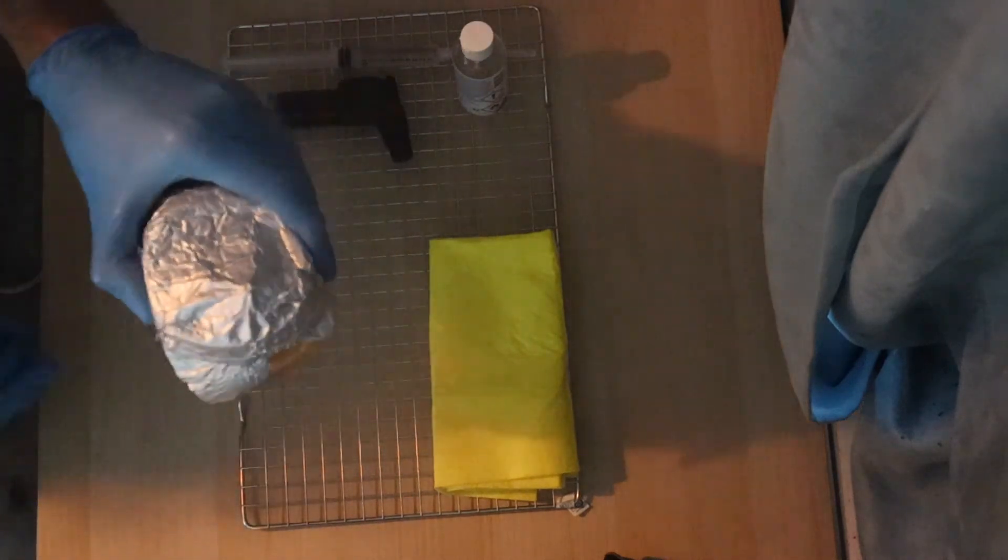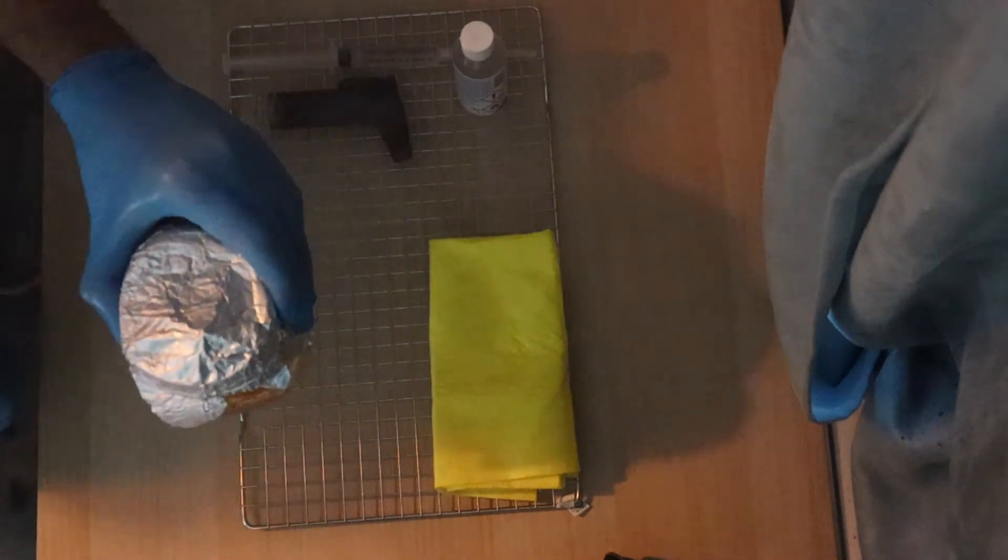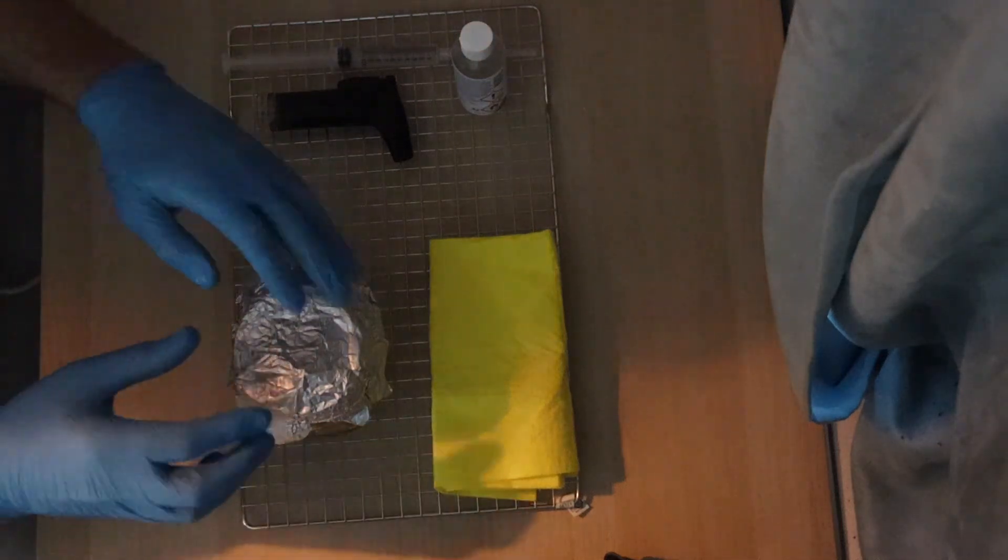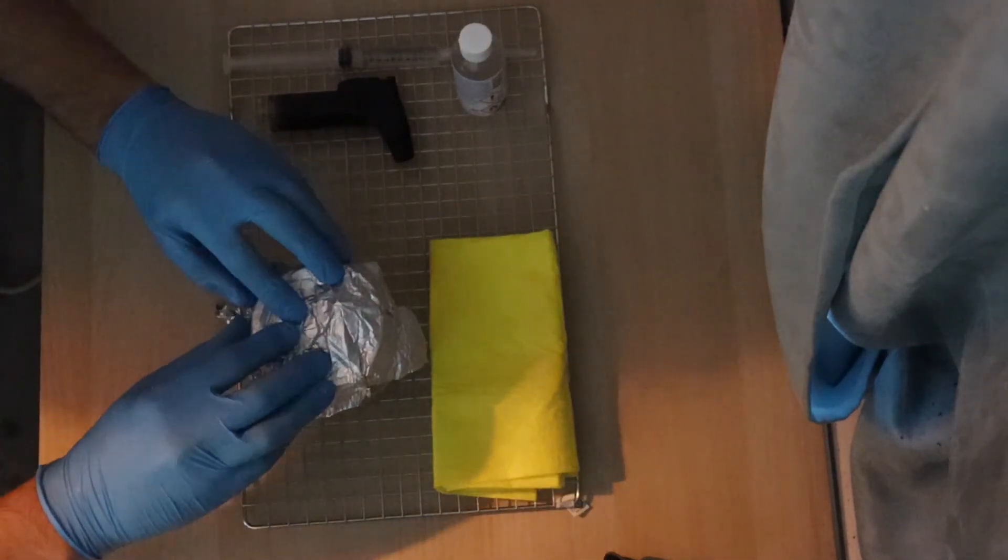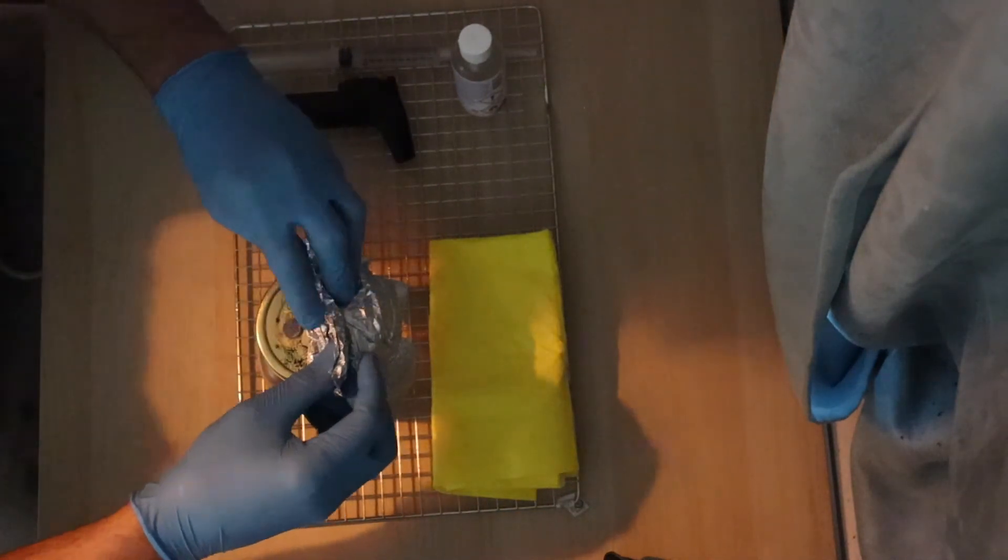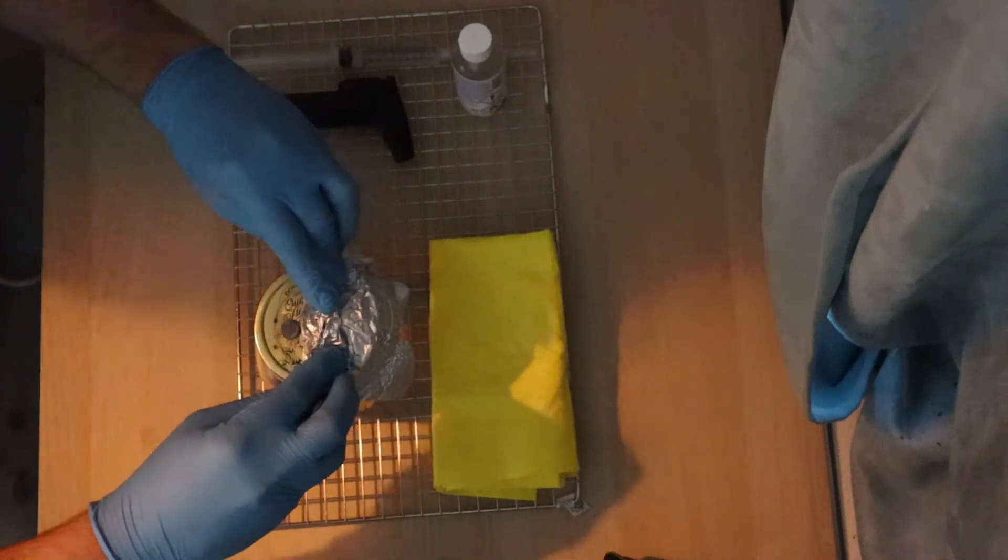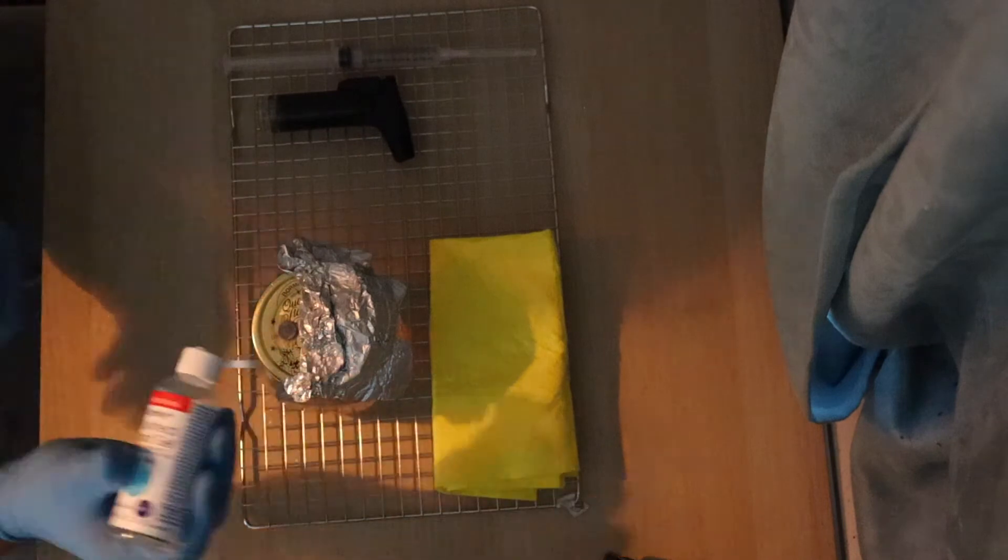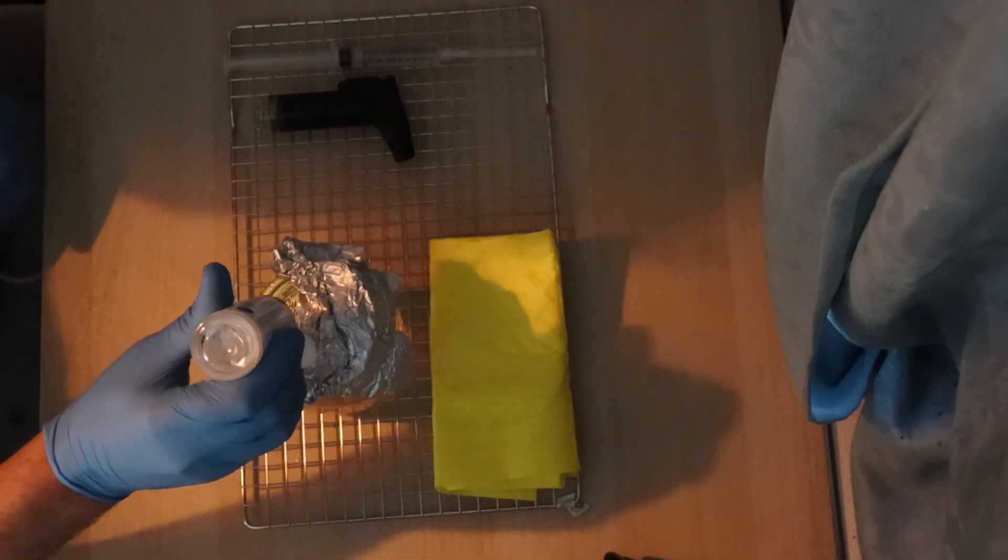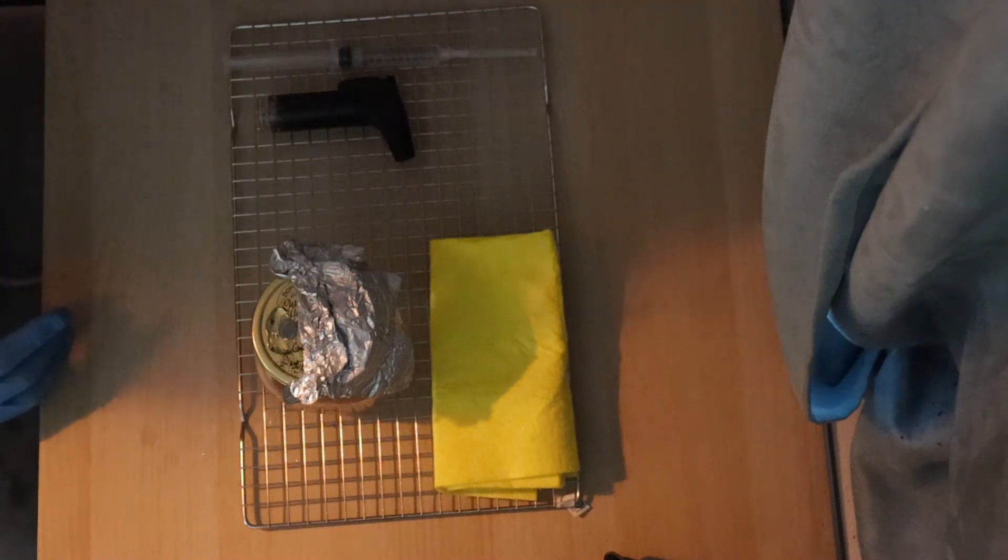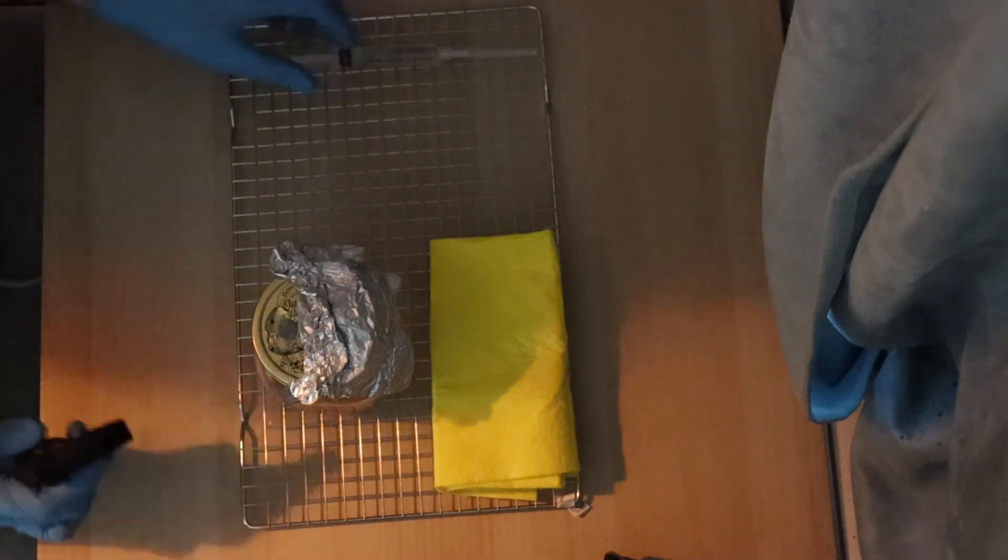Give the jar a quick spritz. Just to be sure we kill any bacteria or anything that might be on there. Now feel around for the injection port and just lift the foil off of that. And I like to give a blob of alcohol directly on top. Just as another layer of insurance. There it goes.